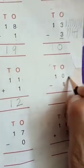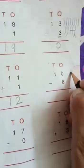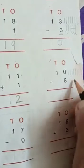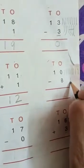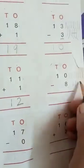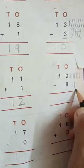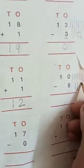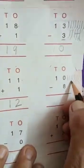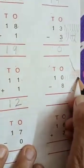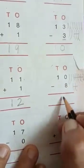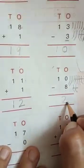Now next: 10 minus 8. Draw 10 lines: 1, 2, 3, 4, 5, 6, 7, 8, 9, 10. And we have to take away 8 lines: 1, 2, 3, 4, 5, 6, 7, 8. How many lines are left? 1, 2. Answer is 2.